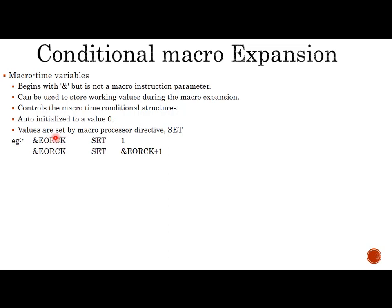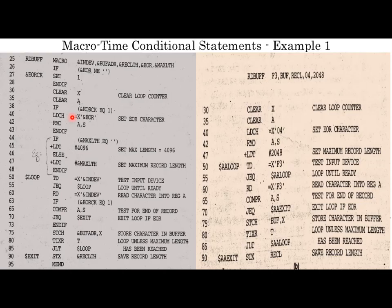In this example, EORCK is a macro time variable — it is not a macro instruction parameter. Since it starts with ampersand, it is a macro time variable. The initial value of this macro time variable is 1, and it is initialized using the macro processor directive SET. We compare this macro time variable with our loop variable, similar to how we use 'i' in a for loop.